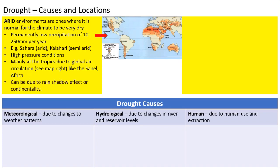Deserts can also occur because of the rain shadow effect. If you have a mountainous area like the Andes off the west coast of South America, as air travels over the Pacific Ocean and hits the mountains it rises, creating relief rainfall. By the time it gets to the other side, it's rained off most of its moisture, so those areas experience desert conditions even outside normal desert latitudes — such as the Patagonian Desert at the tip of South America. You can also get deserts in inland areas of very large continents like Asia, simply because they are so far from the sea.